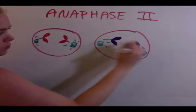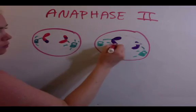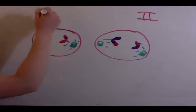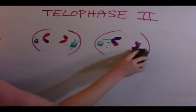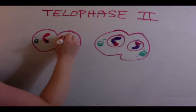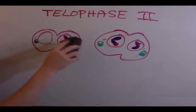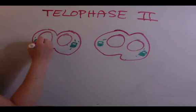Finally, in telophase 2, the nuclear membrane reforms, and the chromosomes relax. Then, the process of meiosis finishes with cytokinesis, which results in four haploid cells.